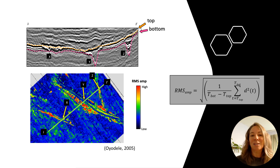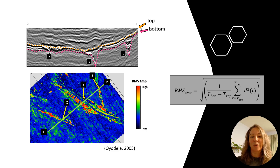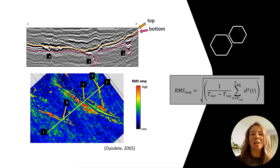The mathematics may look intimidating, but let's break it down into a single trace attribute. For each point in our seismic data, we take a window of samples, square each value, find their average, and take the square root.